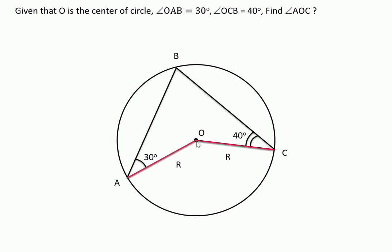Now we will draw a line from the center to point B on the circumference. And this OB is also the radius of circle.